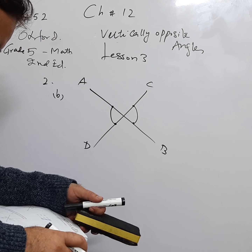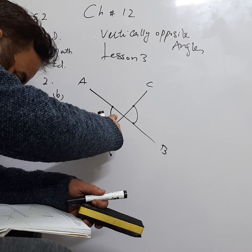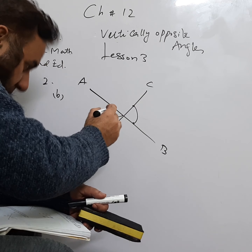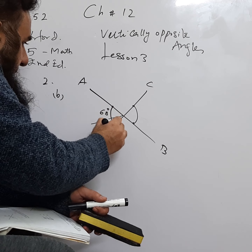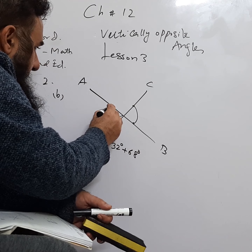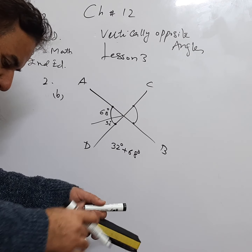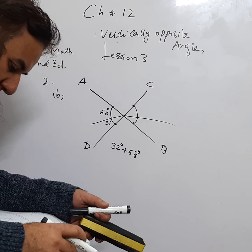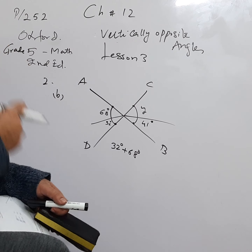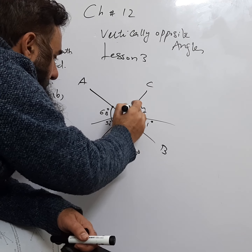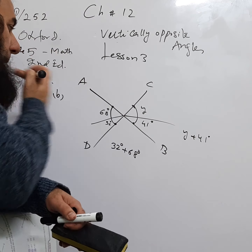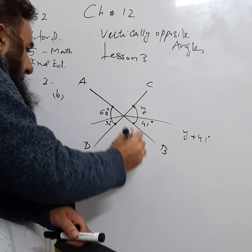This angle has been split into two parts: one is 32 and the other is 68, so the complete whole angle is 32 plus 68, which equals 100. On the other side, the angle has also been split into two parts: Y and 41. So this whole angle equals Y plus 41.